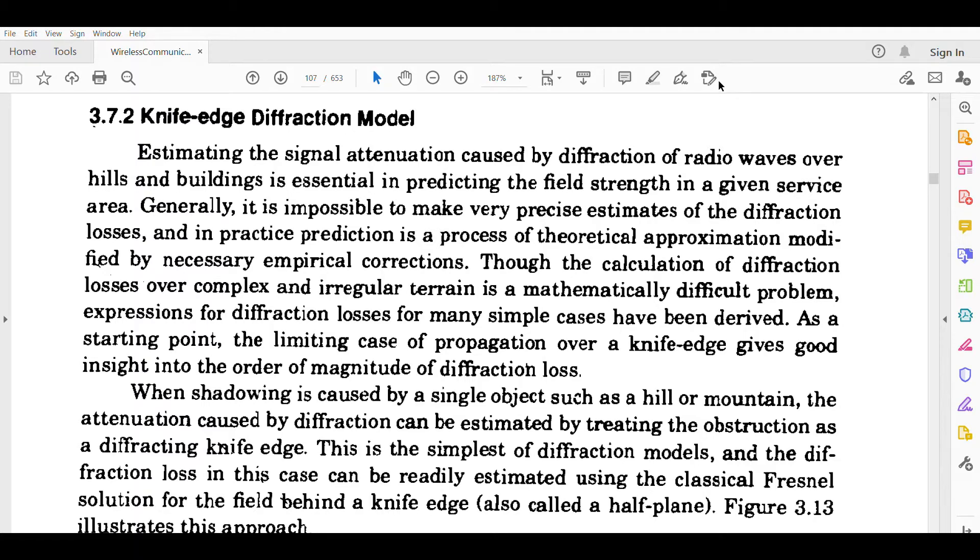Estimating the signal attenuation caused by diffraction of radio waves over hills and buildings is essential in predicting the field strength in a given service area. Generally, it is impossible to make very precise estimates of the diffraction losses, and in practice, prediction is a process of theoretical approximation modified by necessary empirical corrections.